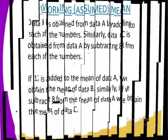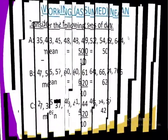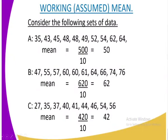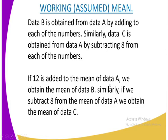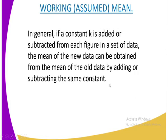Considering the means: to get the mean of data B, we added 12 to the mean of data A, so our constant here is 12. To get the mean of data C, we subtracted 8 from the mean of data A, so we are working with a certain constant.